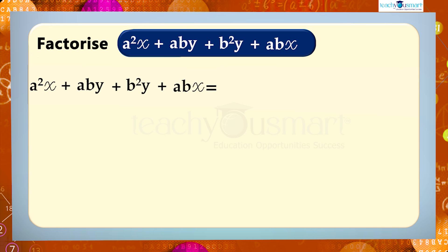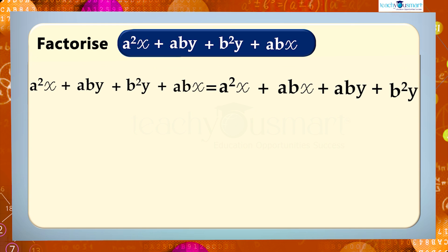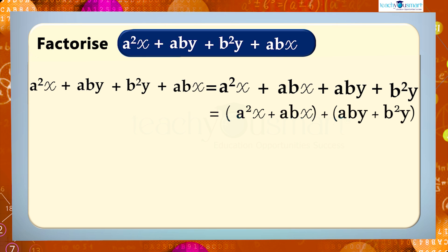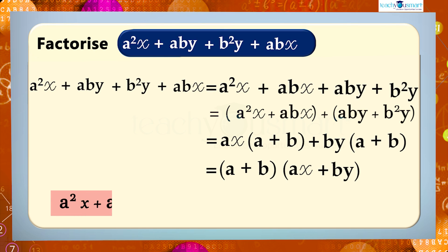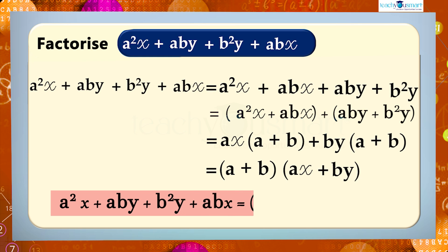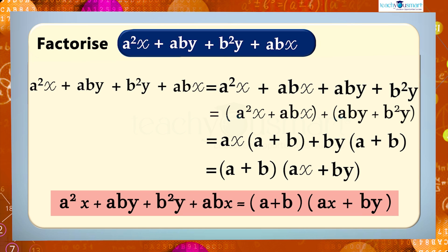So first we have to arrange the terms as a²x + abx + aby + b²y. Then by grouping, we get (a²x + abx) + (aby + b²y). Taking ax as a common factor for the first two terms and by as the common factor for the second two terms, we get ax(a + b) + by(a + b). Now (a + b) is common in both terms, so it becomes (a + b)(ax + by). That is, a²x + aby + b²y + abx equals (a + b)(ax + by).